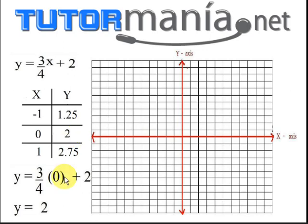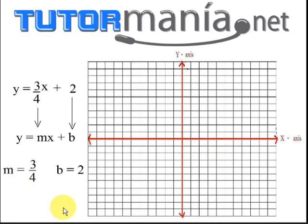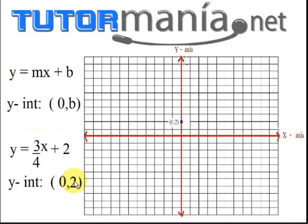But here's an easier way. Let's make use of the equation already being in slope-intercept form. So since we know that m equals 3 fourths and that b equals 2, we know that our y-intercept point is going to be 0,2. And that for our next point, we're going to go up 3 and to the right 4.